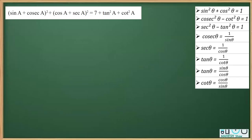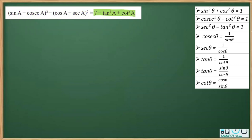In the next question from the chapter trigonometric identities, we have to prove the trigonometric identity: (sin a + cosec a)² + (cos a + sec a)² is equal to 7 + tan²a + cot²a. Here we will not be converting cosec into sine or sec into cos.